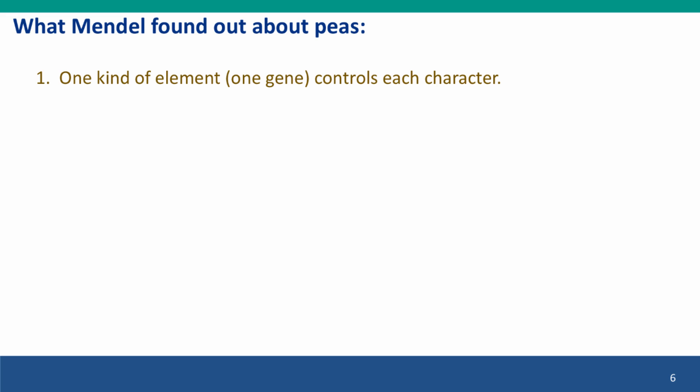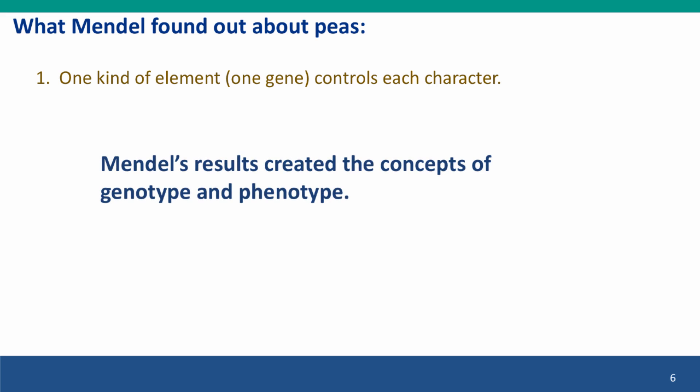What he found out was surprisingly revolutionary. He found that there must be an element — we now call it a gene — that controlled each of the characters he studied. And so in doing this, he created the concepts of genotype and phenotype. Before then, the properties of the organism and whatever caused them were kind of blurred together in people's minds. He created this distinction.